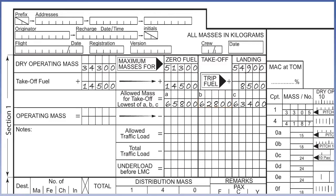Before we can calculate the allowable traffic load, we must first calculate the operating mass. This is achieved by adding the take-off fuel, 14,500 kilograms, to the dry operating mass, 34,300 kilograms, which gives 48,800 kilograms. Transfer the 48,800 kilograms in the direction of the arrow to the column under B, 62,800 kilograms. To find the maximum allowed traffic load, subtract the operating mass, 48,800 kilograms, from the value at B, the limiting take-off mass, 62,800 kilograms, which equates to 14,000 kilograms.